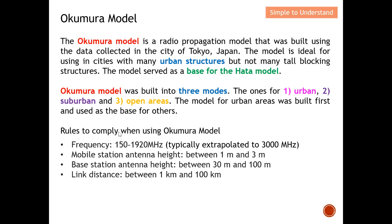Let's quickly go through the rules to comply with when using the Okumura model. The frequency range is from 150 to 1920 MHz, but can be extrapolated up to 3 GHz. The mobile station antenna height must be between 1 and 3 meters, typical for cellular devices. The base station antenna height is typically between 30 and 100 meters, mounted on top of buildings. The link distance between mobile station and base station is from 1 to 100 kilometers.